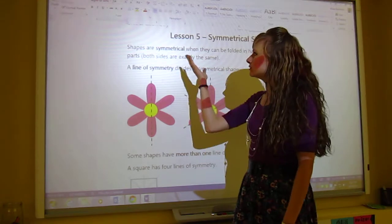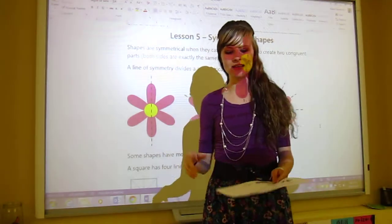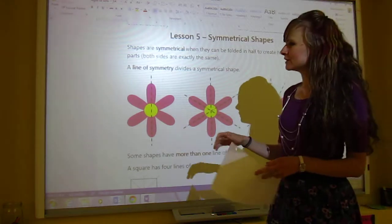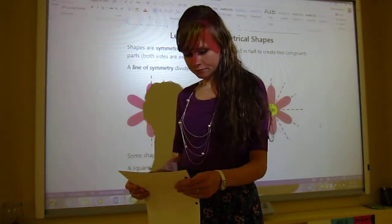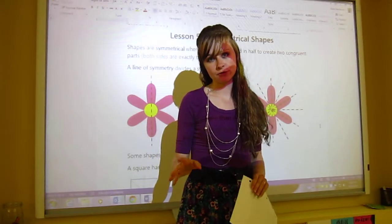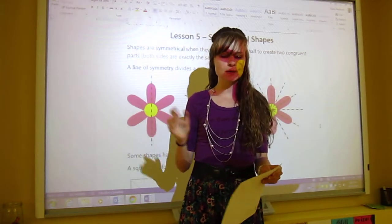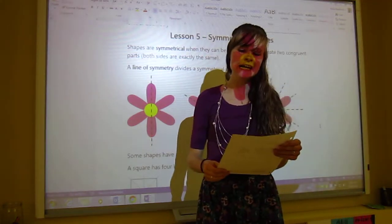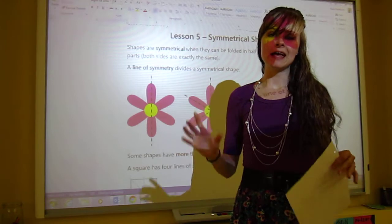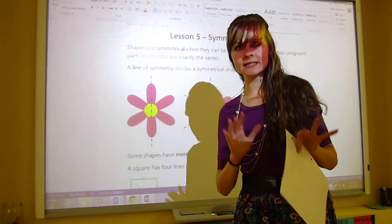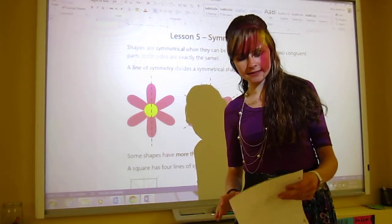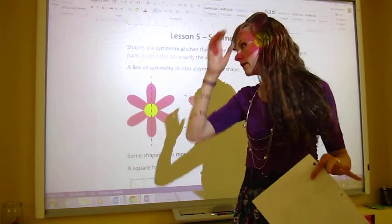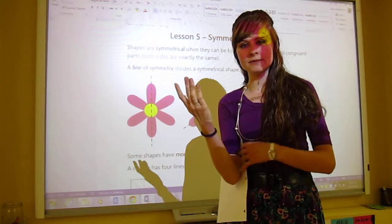Okay, so you've got a sheet here with beautiful flowers and on the board they are pink even. But what we're looking at is, first of all let me remind you of what symmetrical means or symmetry. So it says that shapes are symmetrical when they can be folded in half to create two congruent parts. And remember congruent means the same shape and size. Okay, so both sides are exactly the same.